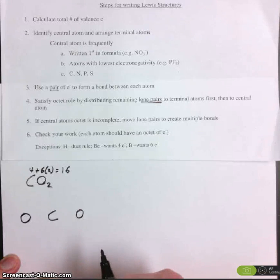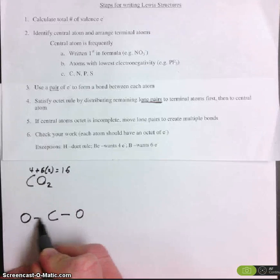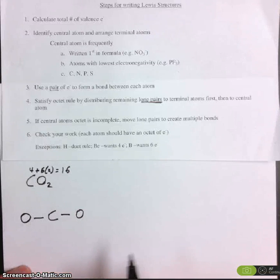Step number three, use a pair of electrons to form a bond between each atom. We have 16 electrons. Let's use a pair for single bonds. There's two, four. That means we have 12 electrons left to distribute.